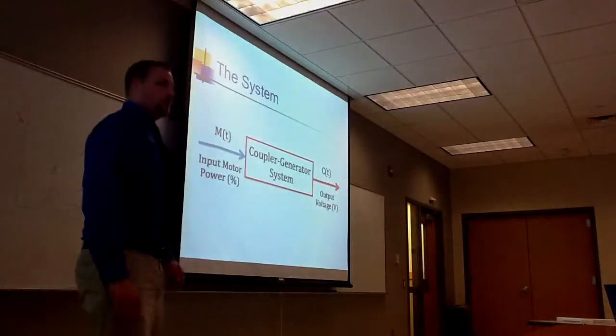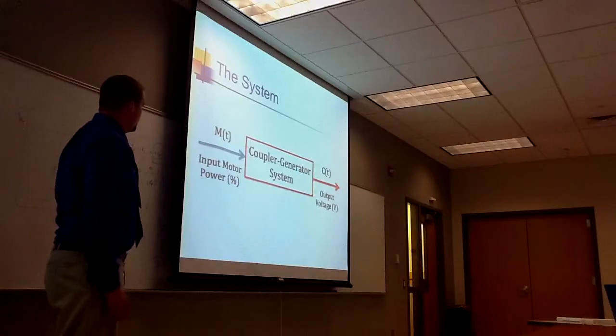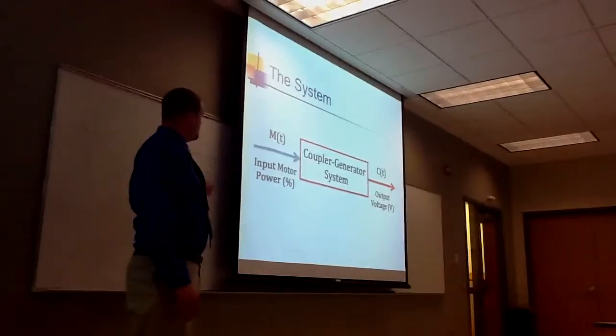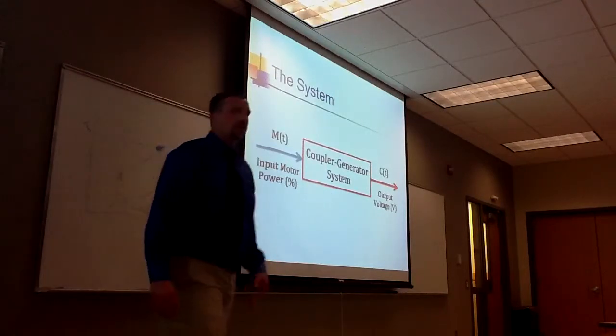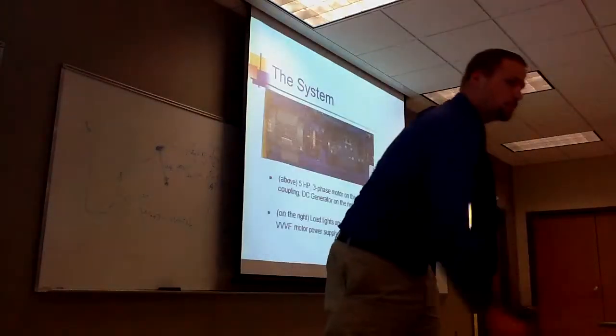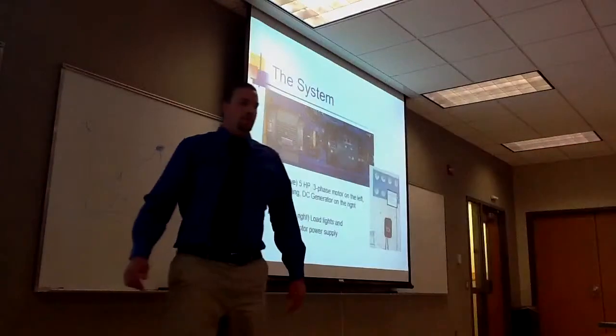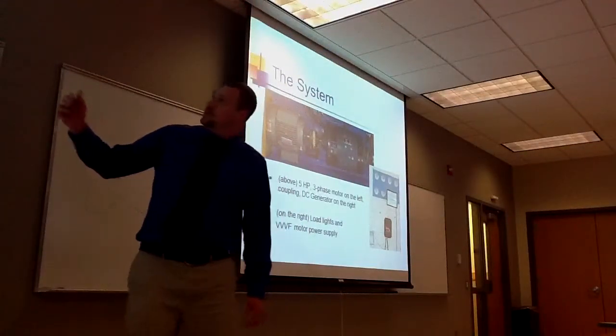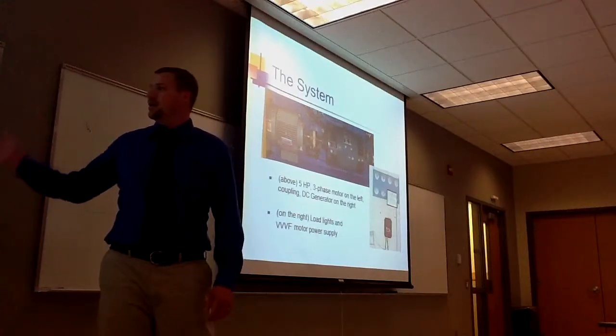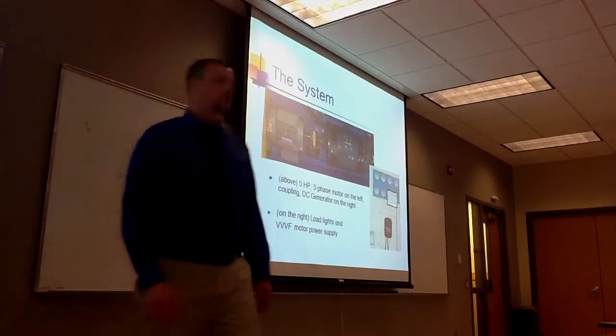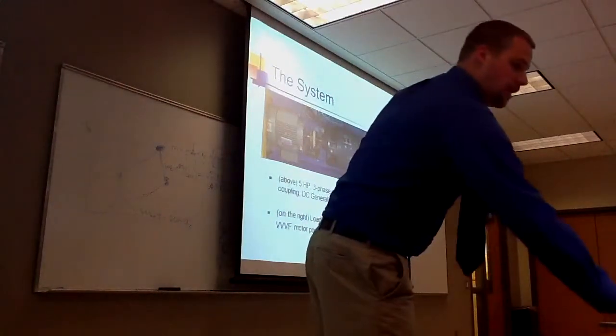Here is a block diagram of the system and the input going into the system to give us the output. Here we have a picture of the motor and DC generator, and then the lights that give a visual representation of what's happening.